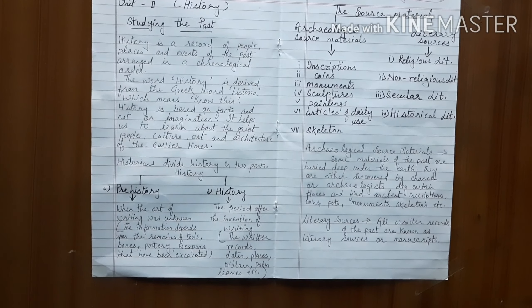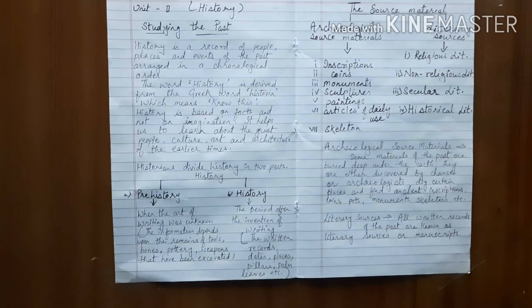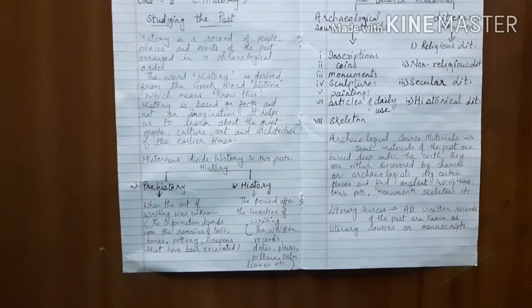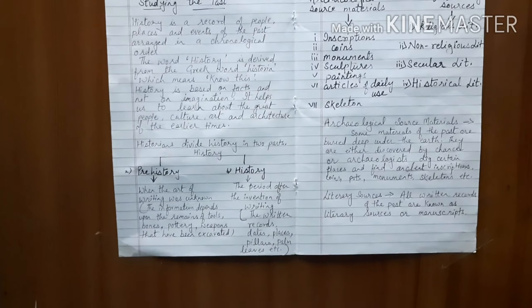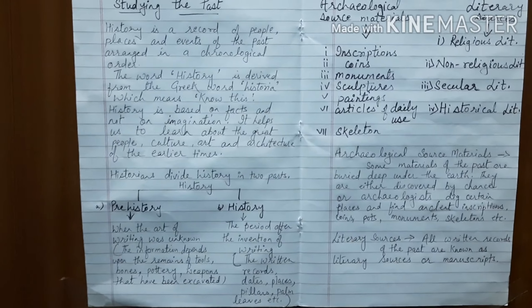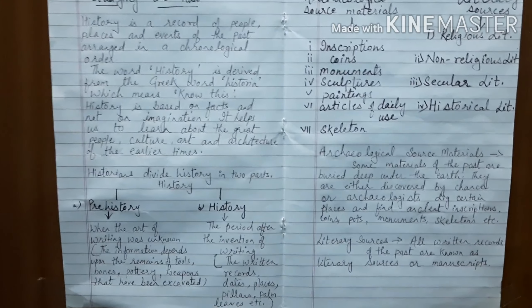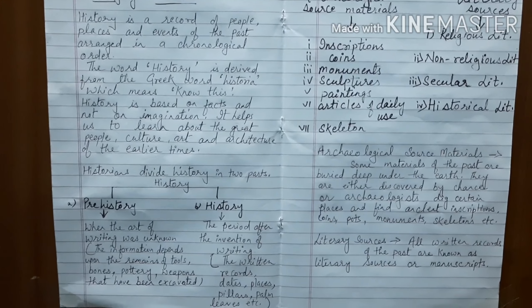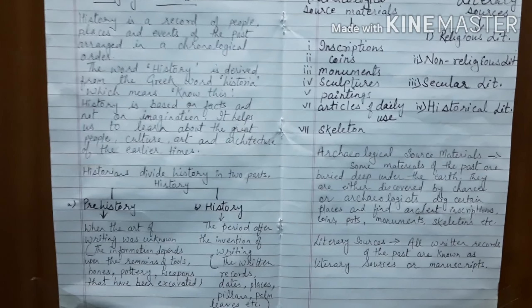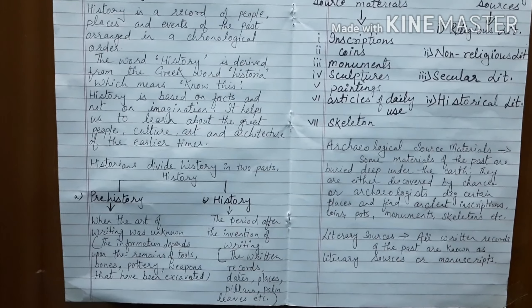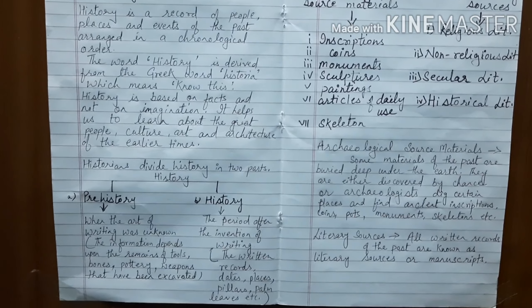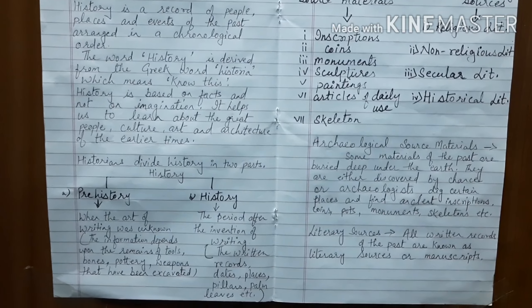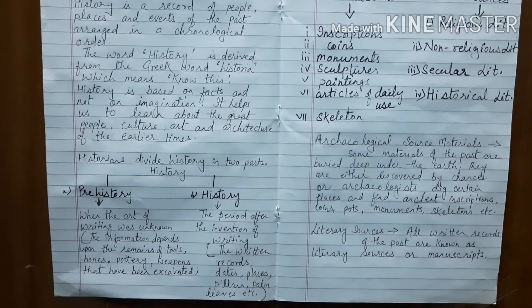History is a record of people, places, and events of the past arranged in a chronological order. The word History is derived from the Greek word 'Historia,' which means 'to know' or 'to come to know.' History is based on facts and not on imagination. It helps us to learn about the great people, culture, art, and architecture of earlier times.